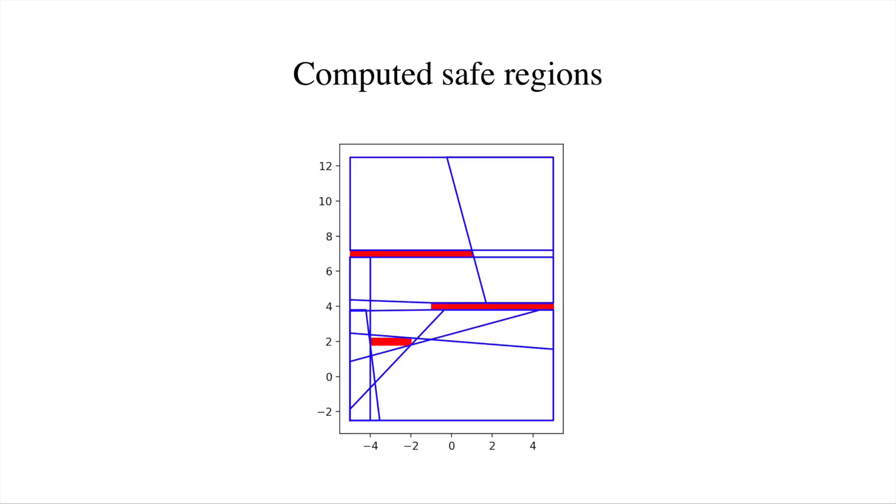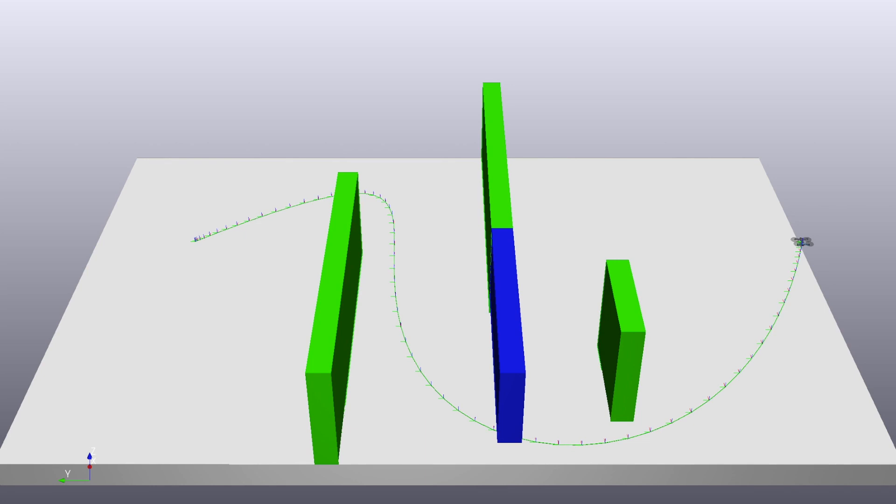For the second flight test, an obstacle environment requiring more advanced maneuvers is considered. Here the quadrotor can be seen following the trajectory calculated by the planner.